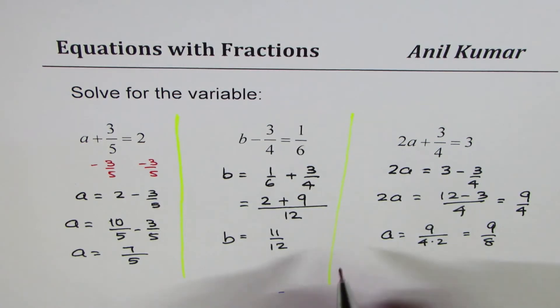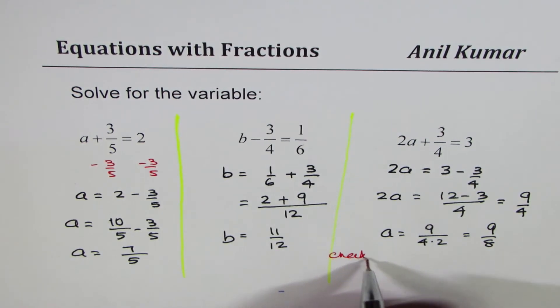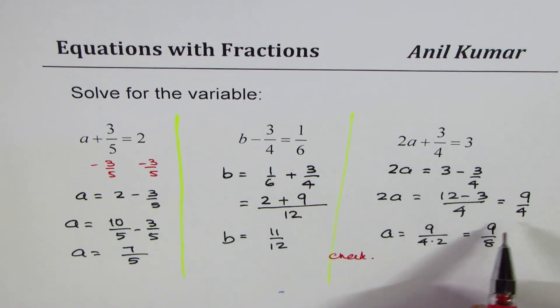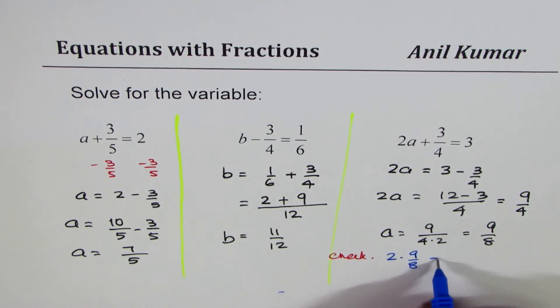So let's also check it. So to check, what should we do? We replace a with 9 over 8. So we get what? We get 2 times a is 9 over 8 plus 3 over 4. So let's check from the left side.